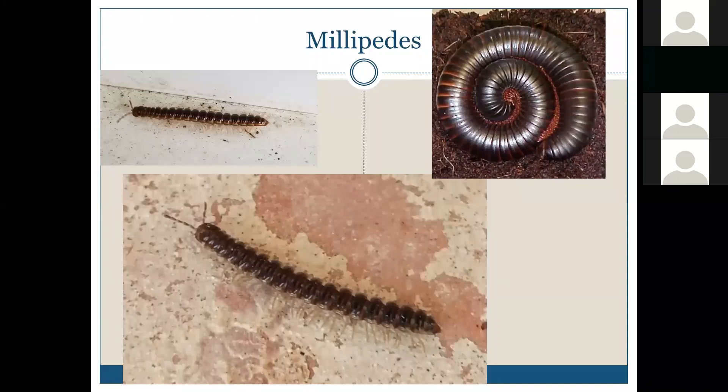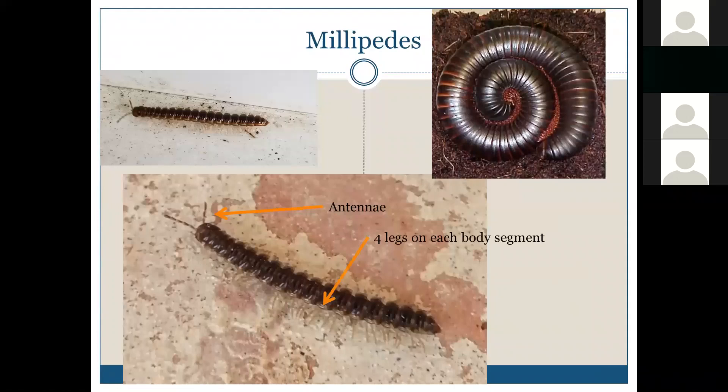Millipedes are typically what people are calling to ask about. When you look at a millipede to tell the difference, you are going to look for a single pair of antennae. They have a head, they have a long worm-like body, and they also have four legs on each of their body segments. Their body is also more rounded in shape, which will tell them apart from centipedes.